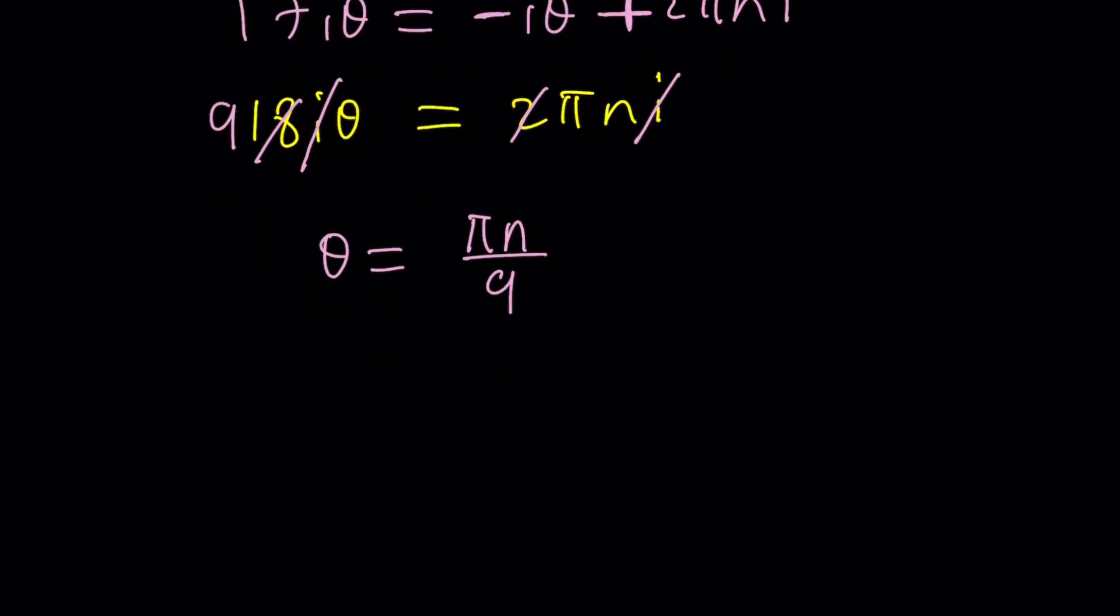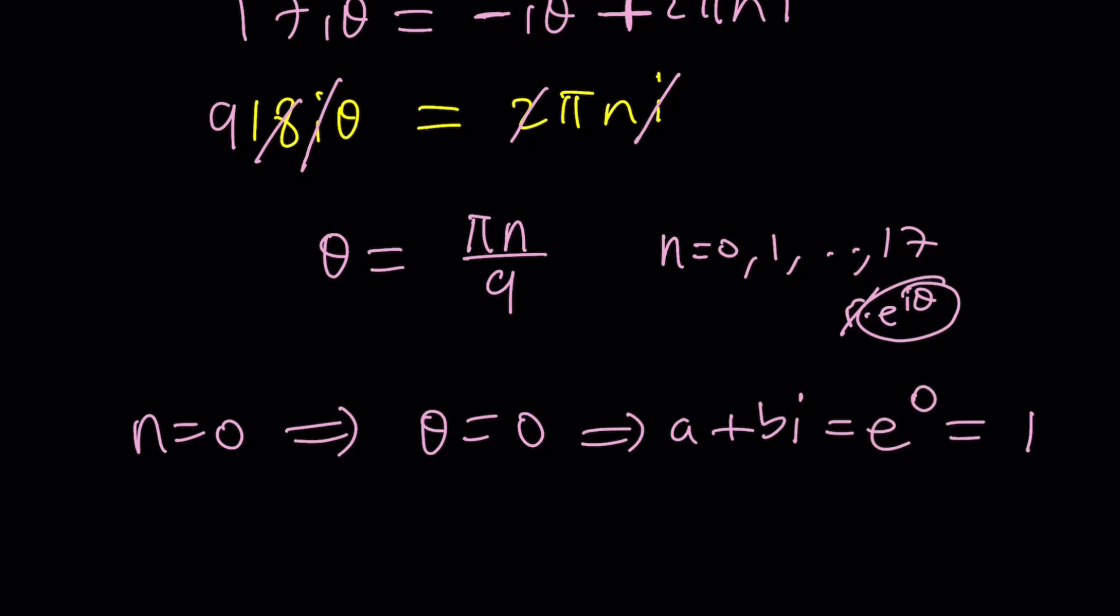n can take which values? Think about it. n can be 0, 1, 2. Now when n becomes 18, you get 2 pi, right? Which is the same as 0. So you could probably use all the way up to 17 and including 17. That gives you 18 values. So there are 18 solutions. Are there? Well, start with n equals 0. You get theta equals 0, and this means a plus bi. Remember, it was r e to the i-theta, but r was 1. So it was e to the i-theta. That will be e to the 0, which is 1. So one of the solutions is 1 for n equals 0.